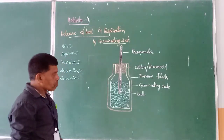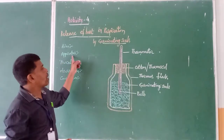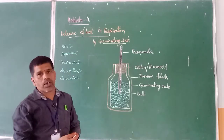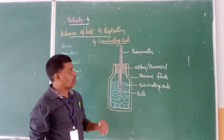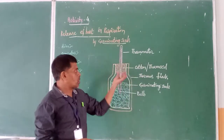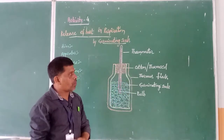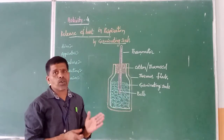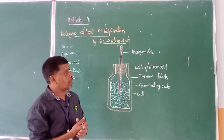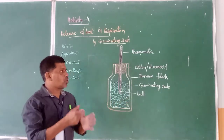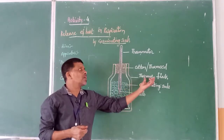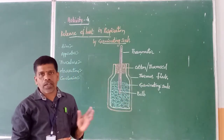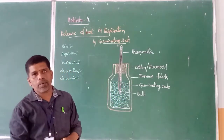Moving to apparatus — whatever materials we are using to perform the experiment, we list them under apparatus. First, since heat needs to be recorded, we require a thermometer. We also require some cotton or thermocole to fix it at the mouth of the thermos flask. We are using a thermos flask so that there is no exchange of heat from outside to inside or inside to outside — the temperature should be maintained, with no exchange. Just as in daily life, a thermos flask keeps its contents at the same temperature.